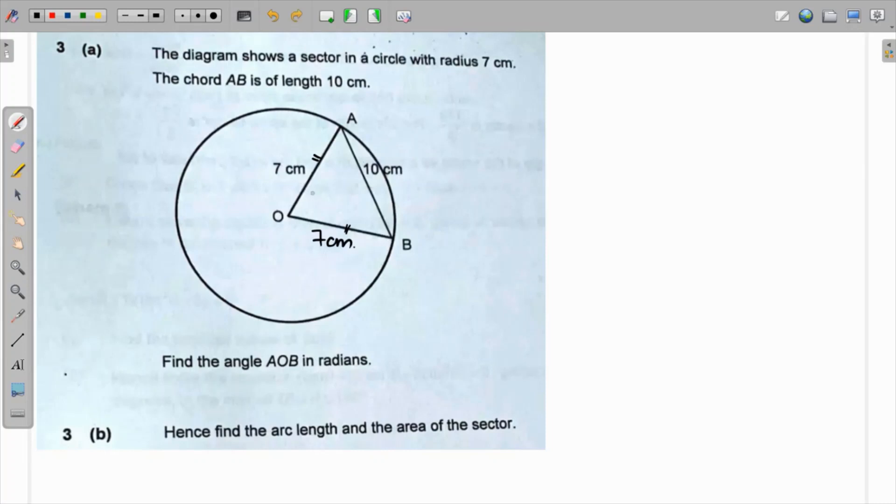First of all we have to find angle AOB. Let's call it theta. We can use the law of cosines which says that cos theta equals 7² plus 7² minus 10² over 2 times 7 times 7.